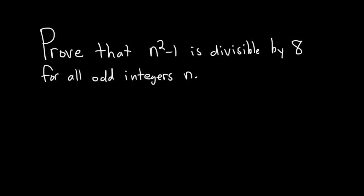In this problem we're going to prove that n squared minus 1 is divisible by 8 for all odd integers n. Before we start the proof, let me briefly recall what it means for a number to be divisible by another number.